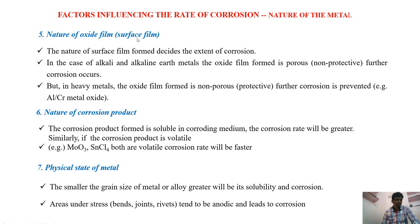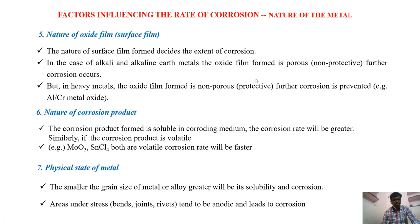Next is the oxide film, or surface film. If that oxide film is more stable, then it acts as a barrier between the atmosphere and the metal, so it may reduce the rate of corrosion. Most alkaline and alkaline earth metals can easily form oxide films, but these oxide films sometimes may be porous. If pores are there, then corrosion will become more. In the case of heavy metals, the oxide layer formed on their surface is non-porous in nature, so corrosive reagents cannot diffuse inside.